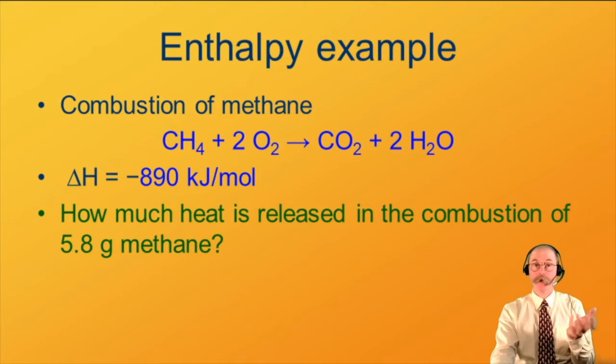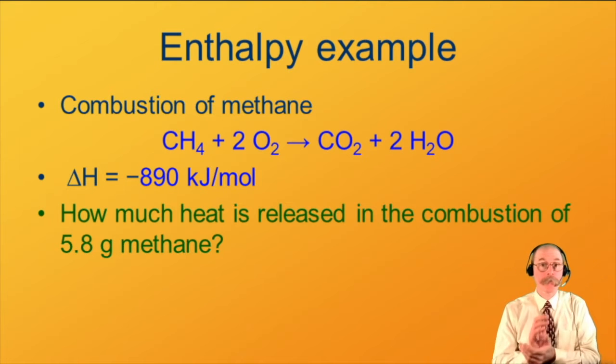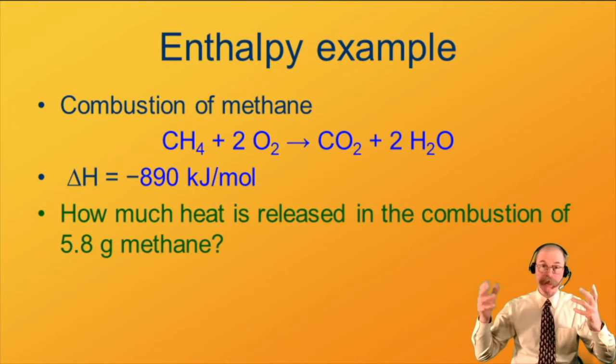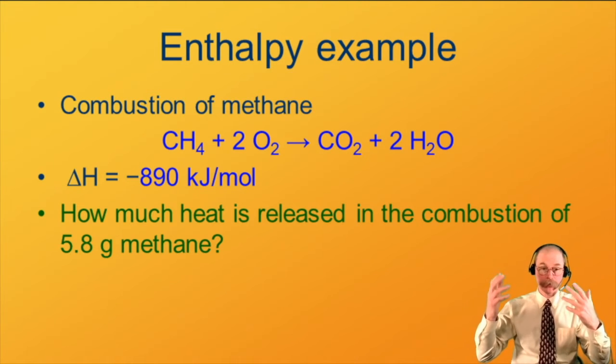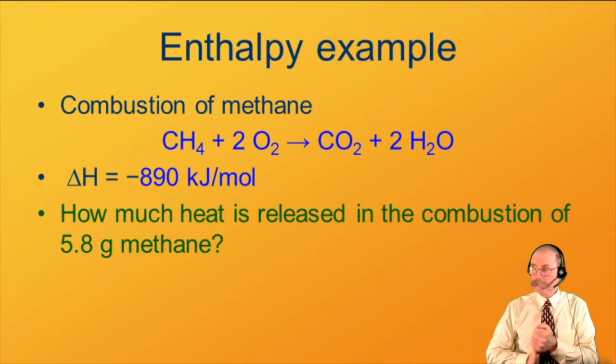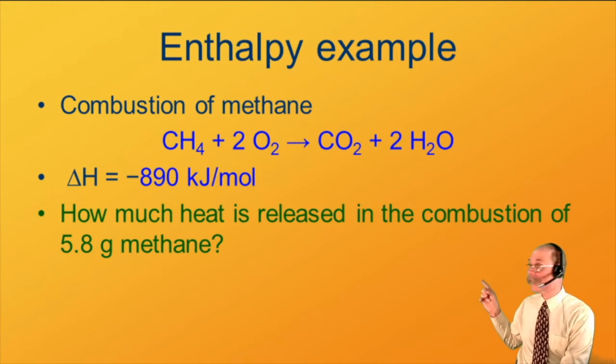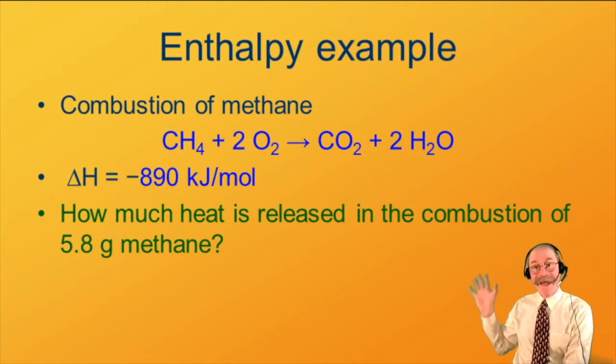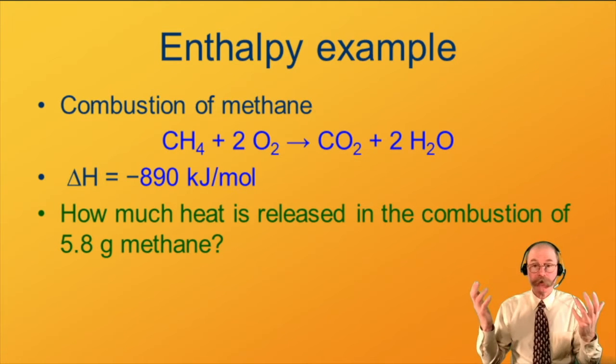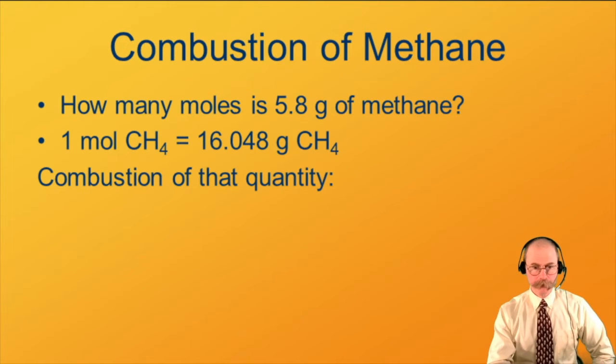One of the uses of this state function is that enthalpy values for given reactions can be tabulated and then used to calculate energy values. For instance, here we have a tabulated enthalpy for the combustion of methane, which releases 890 kilojoules per mole. So given that, we can calculate how much heat is released when you combust 5.8 grams.